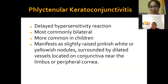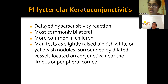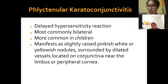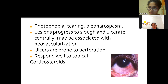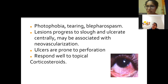Phlyctenular keratoconjunctivitis is a type IV delayed hypersensitivity reaction, can be bilateral, and is more common in children. It manifests as slightly raised pinkish-white nodules on the conjunctiva, with dilated vessels near the limbus or peripheral cornea visible on slit-lamp examination. Photophobia and tearing are very prominent. These lesions may slough and ulcerate and can cause perforation due to epithelial thinning. They respond well to topical corticosteroids to reduce inflammation, but the definitive treatment is anti-tubercular therapy.